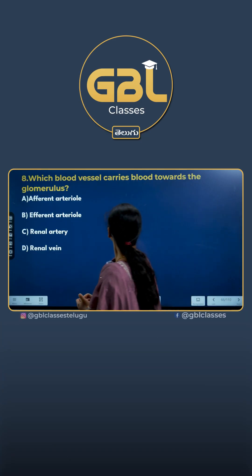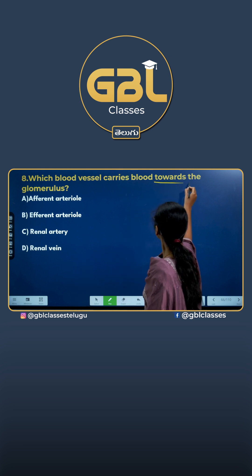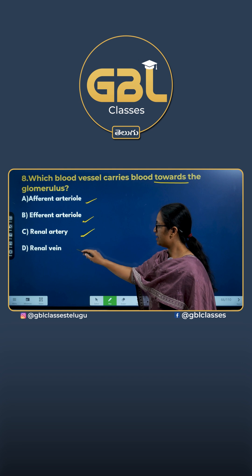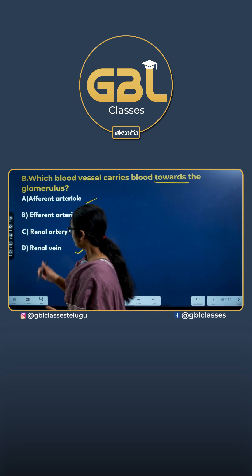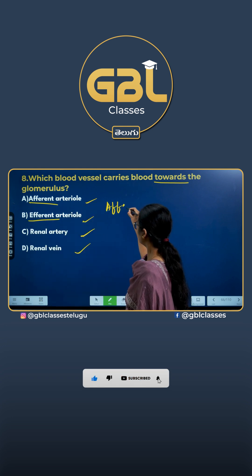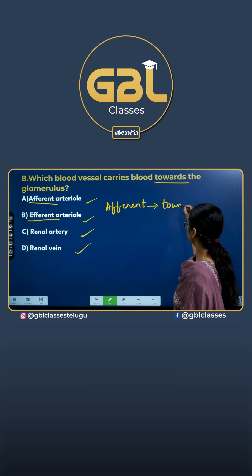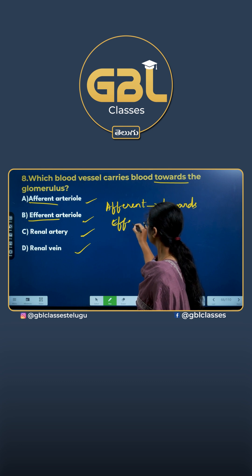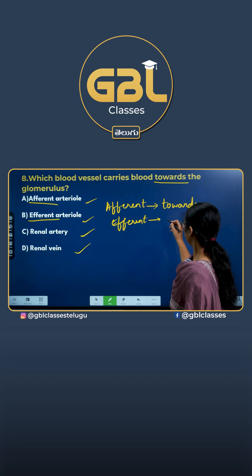Which blood vessel carries blood towards the glomerulus? The options are afferent arteriole, efferent arteriole, renal artery, and renal vein. Whenever we study the words afferent and efferent, afferent basically implies 'towards,' whereas efferent is the term which implies 'away.'